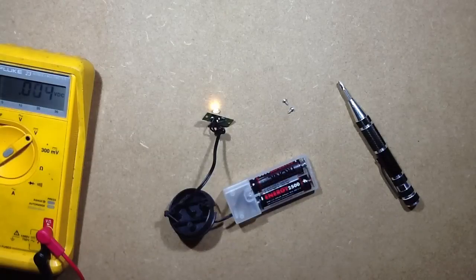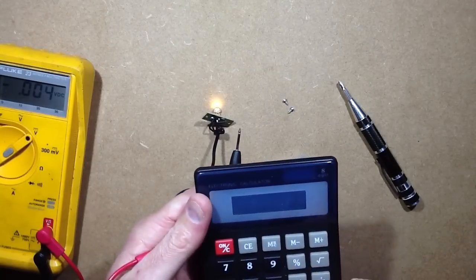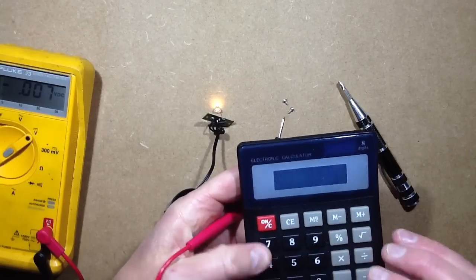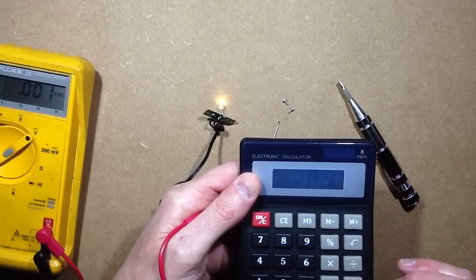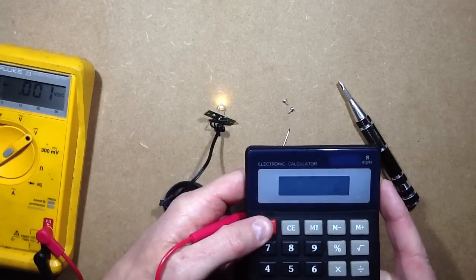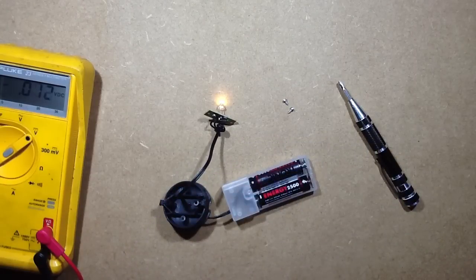So if you consider 0.134, I equals V over R. 0.134 divided by the 56 ohm resistor, the current that's going through it is 2 milliamps at the moment, and progressively that will drop down to about 1 milliamp.